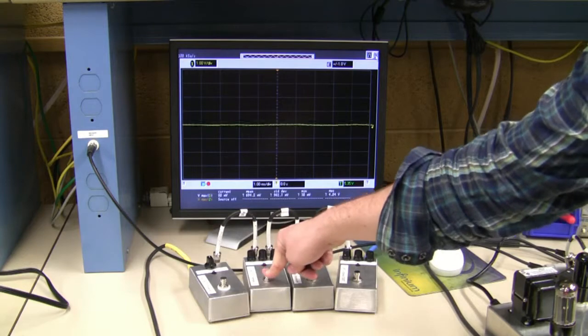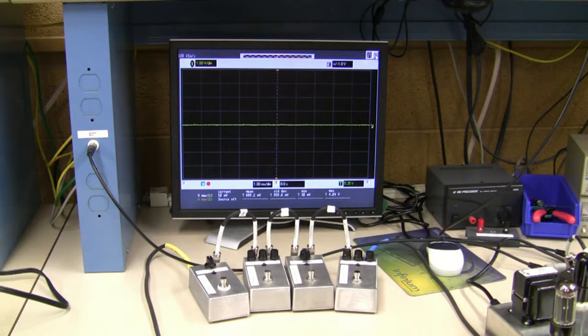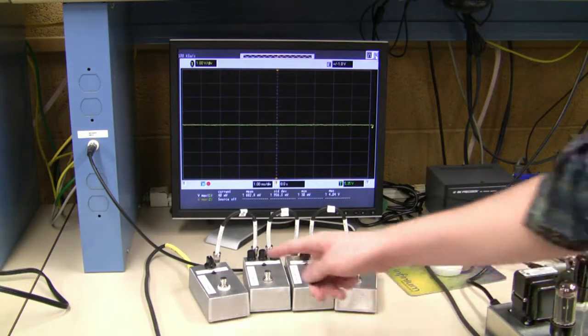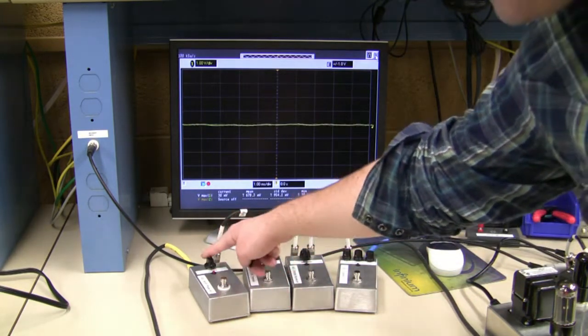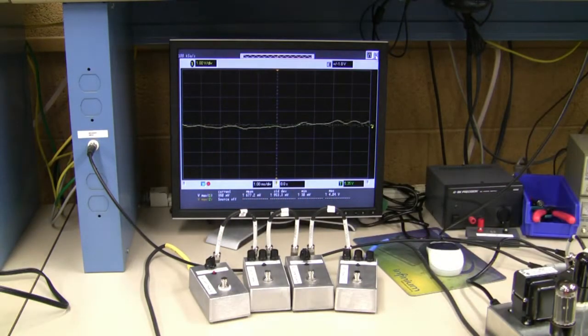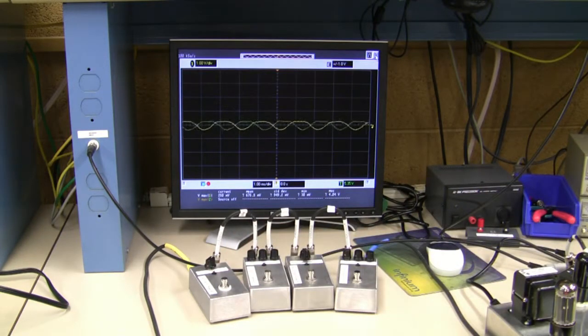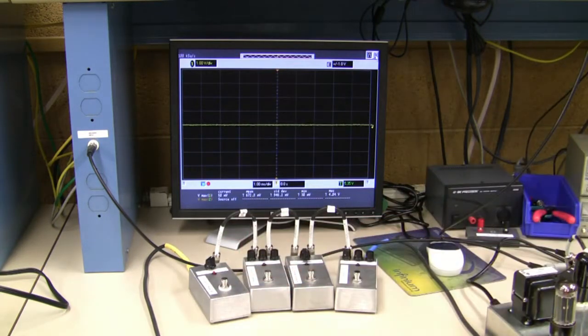The last kit is the MXR Phase 45. Phase 45 is a phase shifter that shifts the timing of the wave more or less. It just makes kind of a spacey sound. Okay, here's a clean signal, and here's the Phase 45.